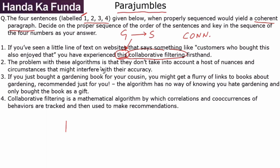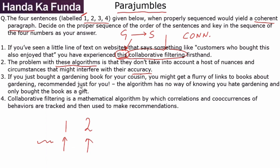Statement two says: 'The problem with these algorithms is that they don't take into account a host of nuances and circumstances that might interfere with their accuracy.' So it is giving problems with these algorithms — presumably the collaborative filtering algorithms — which means statement two should definitely come somewhere after statement one, as collaborative filtering was introduced and an example was given, and now a problem with it is being stated.